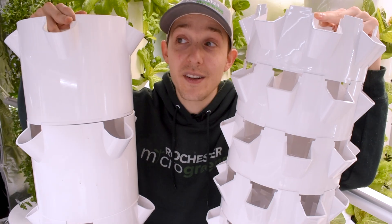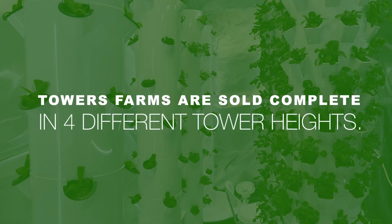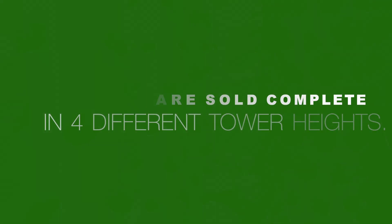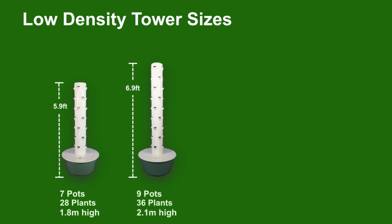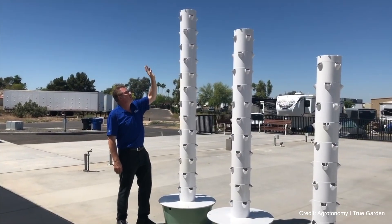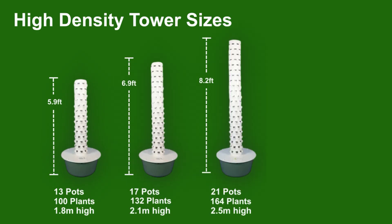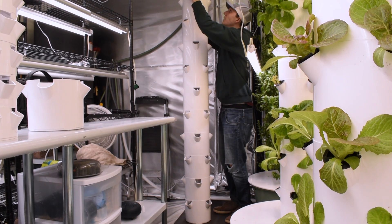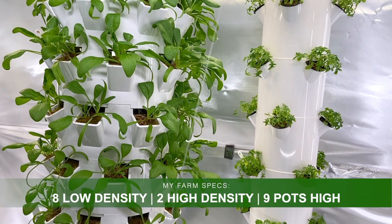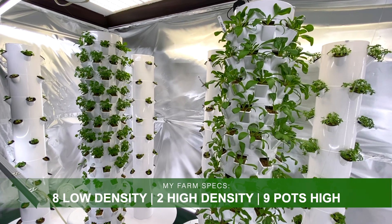Now let's talk about the total planting capacities depending on which kind of tower you use and how high that tower is. For tower farms, these systems are sold complete in four different tower heights. For the low density tower sizes it's seven, nine, eleven, and thirteen pots high, standing at over nine feet tall with a total planting capacity of fifty-two plants. For high density tower sizes it's thirteen, seventeen, twenty-one, and twenty-five pots high, also standing at over nine feet tall but with a total planting capacity of one hundred and ninety-six plants.